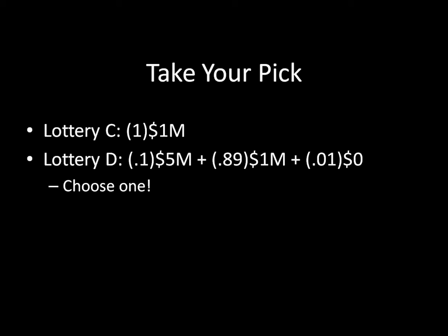Lottery D, on the other hand, is a bit more complicated. 10% of the time it pays you $5 million; 89% of the time it pays you $1 million; and 1% of the time it pays you nothing. Once again, I want you to pretend as though this is real life and choose Lottery C or Lottery D. If you need another moment, pause the video. Otherwise, now I would like you to submit your comment.